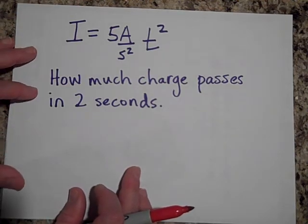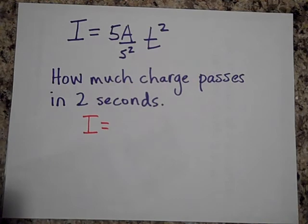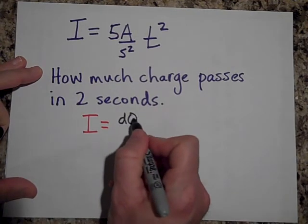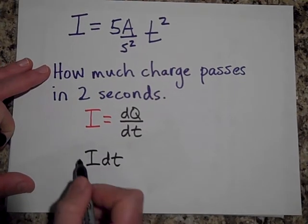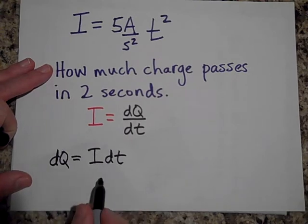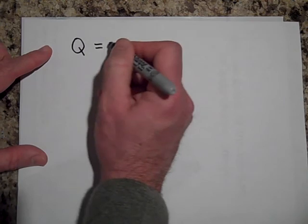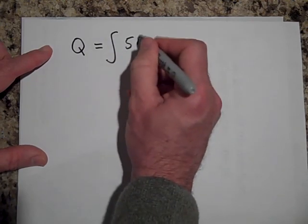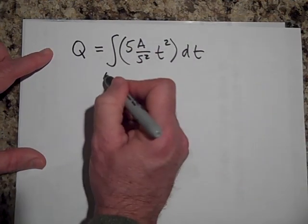Okay. So go ahead and try that, pause and try it. Okay. Well, I is DQ/DT. I think I'm going to use black. I may not finish this in this one. I may have to finish it in the next one. But I is DQ/DT. So if I bring the DT on the other side, then DQ is IDT. And so what you can do with that is you can integrate both sides to get Q. So Q will equal the integral of I, five amps per second squared T squared DT from zero to two seconds.